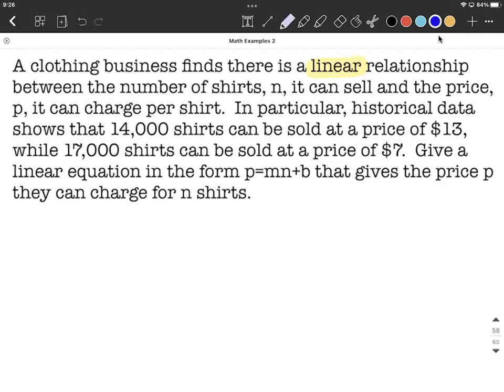In particular, this historic data says 14,000 shirts go along with a price of charging $13 per shirt, and then 17,000 shirts go along with a price of $7. Our goal is to find a linear equation in the form P equals M times N plus B. P is going to be the price they charge for N shirts.